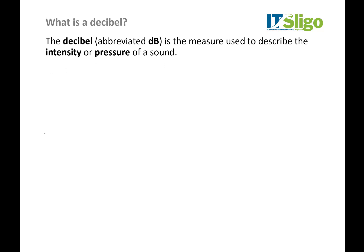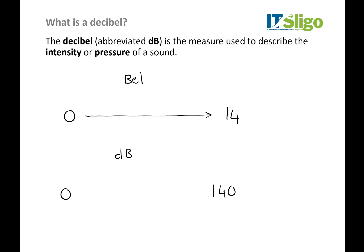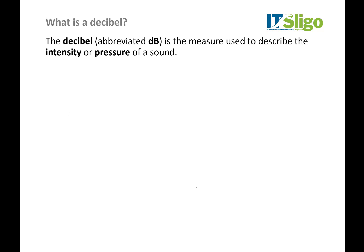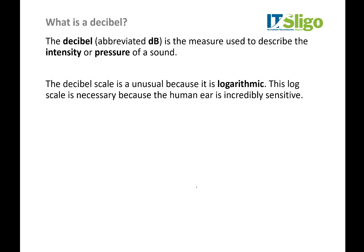The decibel is a measure used to describe the intensity or pressure of a sound. Note — it's not a unit, it's a level. Initially there was the bell, which went from 0 to 14, compressing the whole range of human hearing using logs, similar to pH. But that was very limited and impractical, so they introduced the decibel — there are 10 decibels in each bell, so the whole range of human hearing can be described using a level between 0 and 140. It's very important to note that it's a log scale.